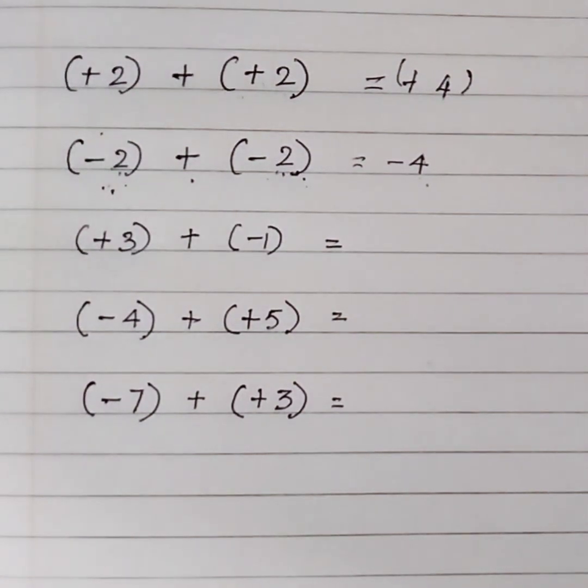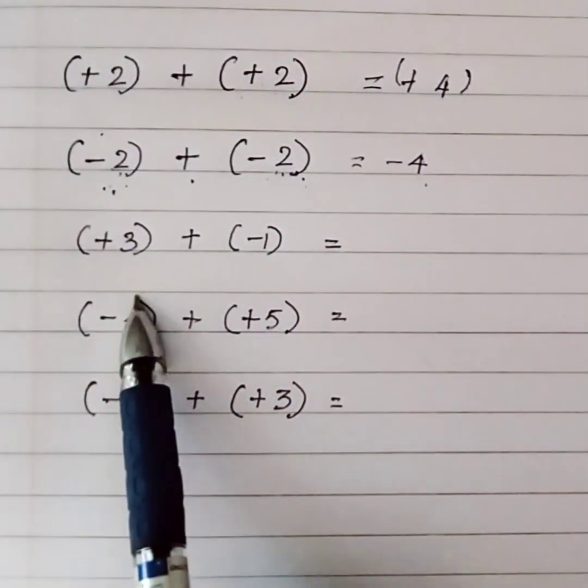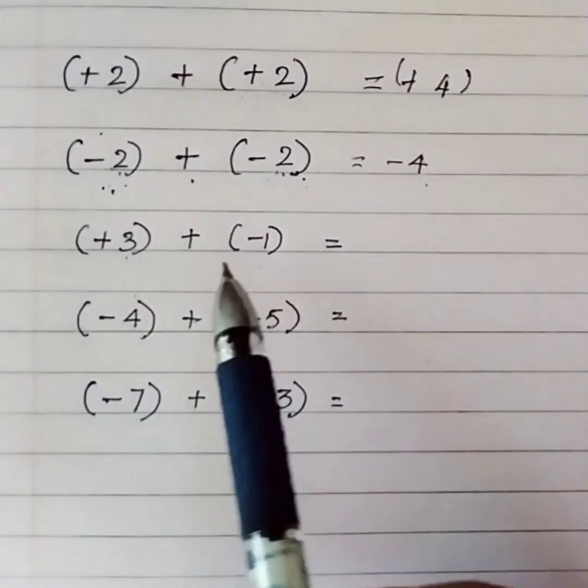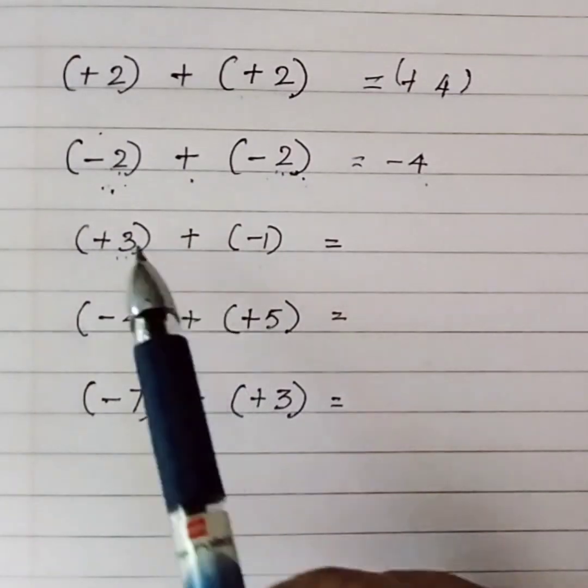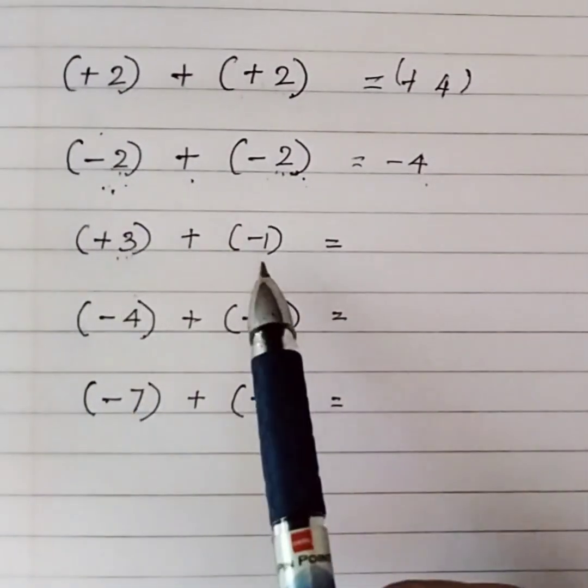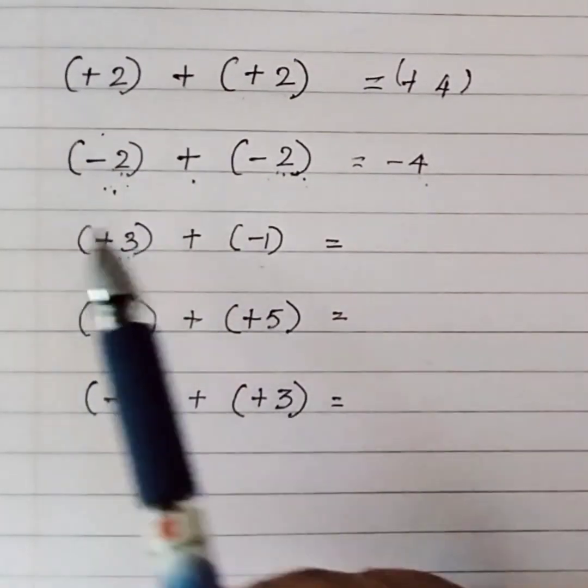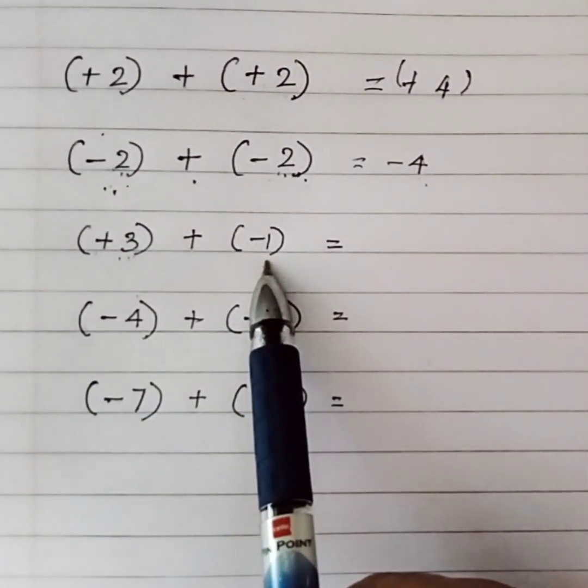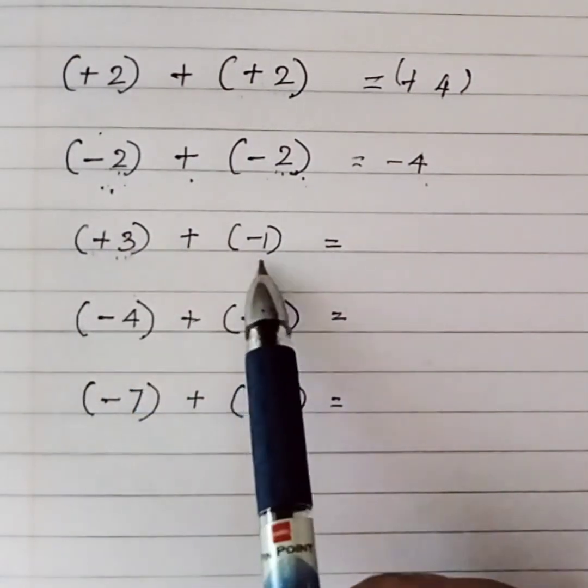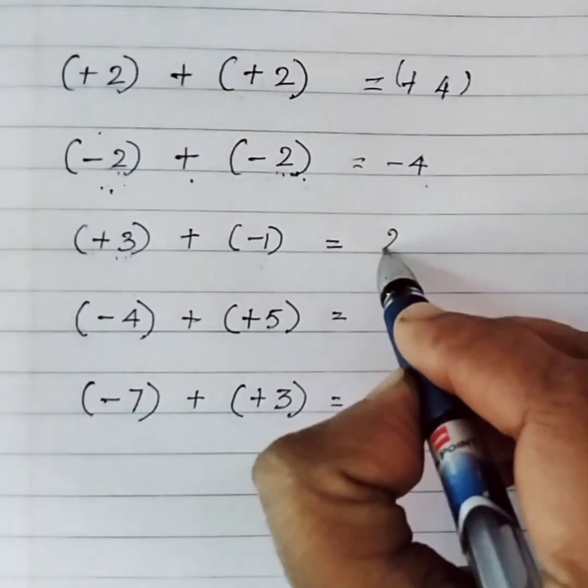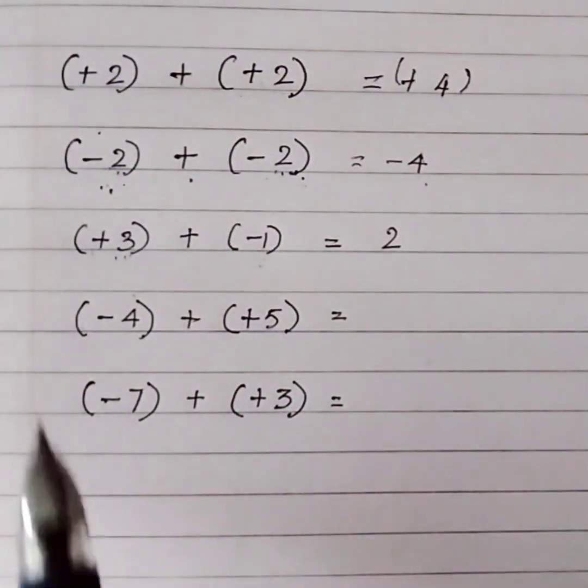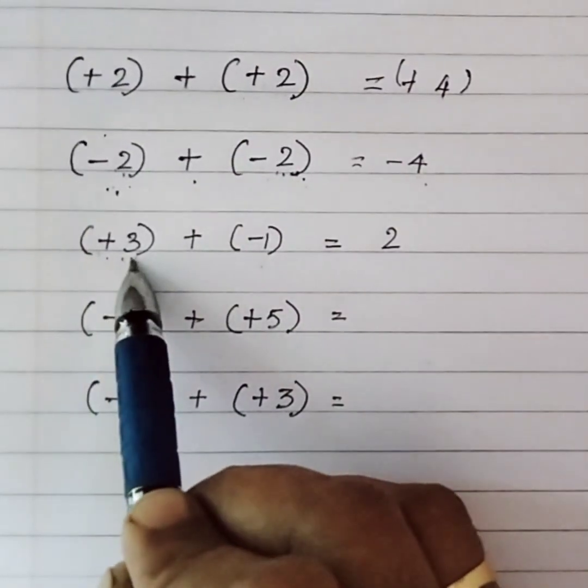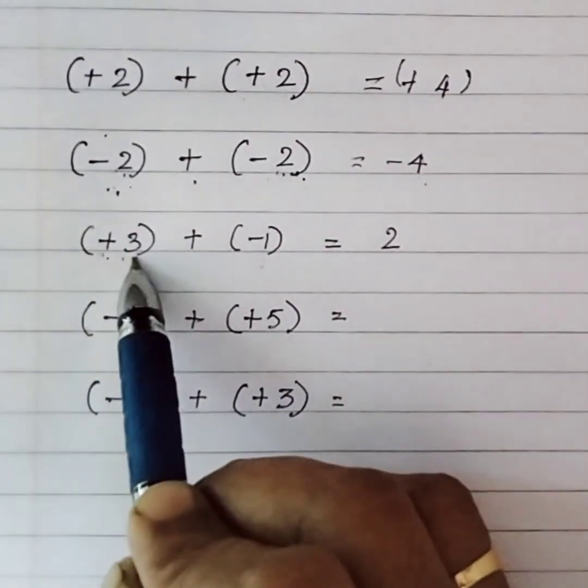Here I have a few questions with different signs. We just saw the rule: if we have different signs, we subtract. So (+3) + (-1) gives us 3 minus 1, which is 2. We write 2 and place the sign of the larger number. The larger number is 3, so the sign is plus. Our answer is +2.